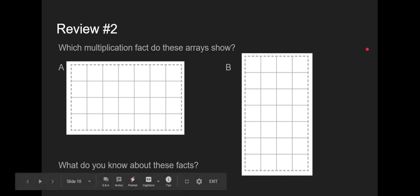Review problem number 2 is showing us which multiplication fact do these arrays show. Let's look at A. Using my pointer, I'm going to count the number of rows: 1, 2, 3, 4. That's 4 rows. And I'm going to go across to see how many squares there are at top: 1, 2, 3, 4, 5, 6, 7. 4 rows of 7 equals 28. This would be 4 times 7 equals 28.